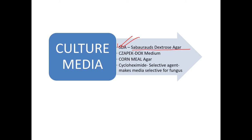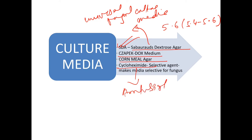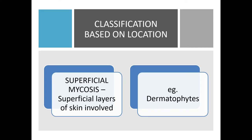Culture media for fungi: SDA — Sabouraud Dextrose Agar — with pH 5.4 to 5.6 is the universal fungal culture media. Czapek-Dox medium and cornmeal agar are also used. Cycloheximide is an antibiotic used as a selective agent to make media selective for fungi.